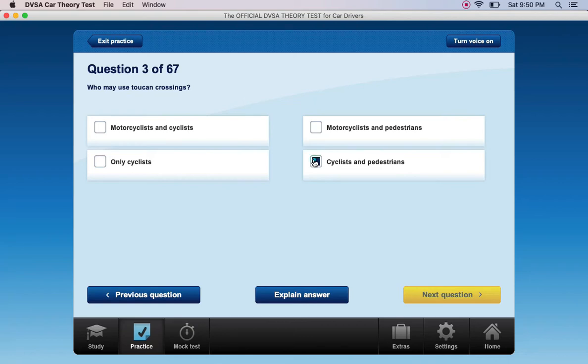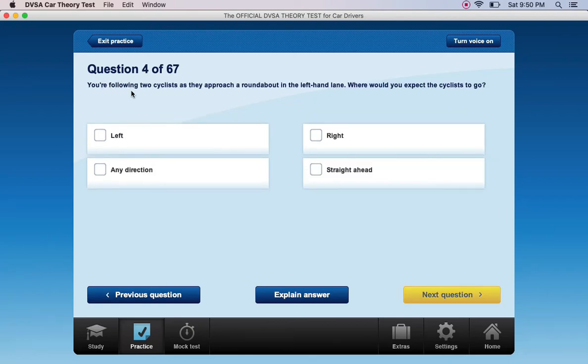Who may use toucan crossings? Motorcyclists and cyclists, motorcyclists and pedestrians only, cyclists, or cyclists and pedestrians. Cyclists and pedestrians.